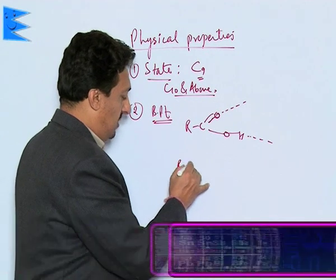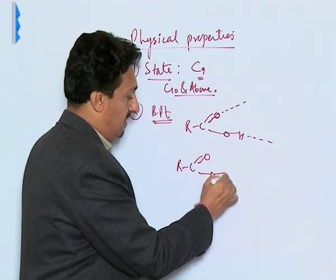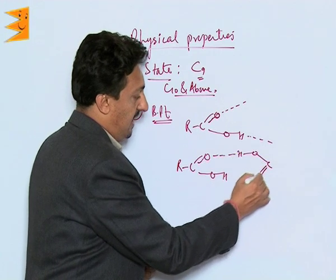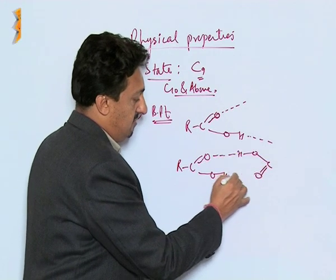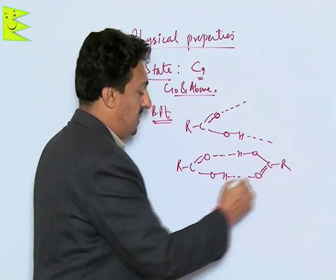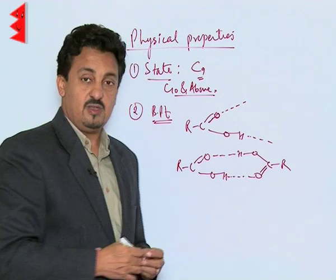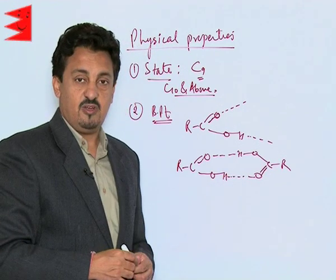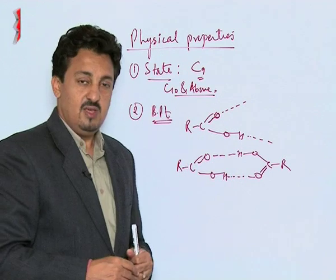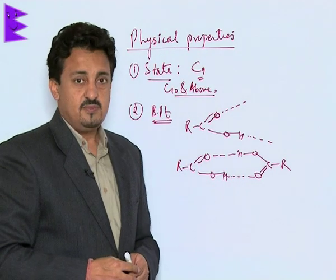In non-polar medium, carboxylic acids exist in the form of dimers because of the formation of hydrogen bonds. This is one of the important reasons for their high boiling points, because the molecular mass effectively becomes double — as we have discussed in the solutions chapter.